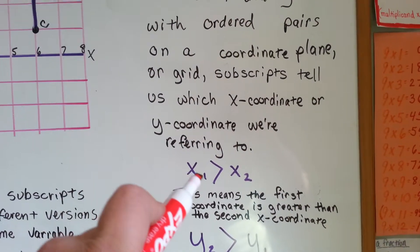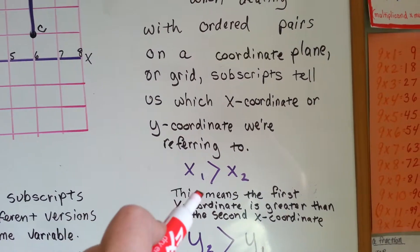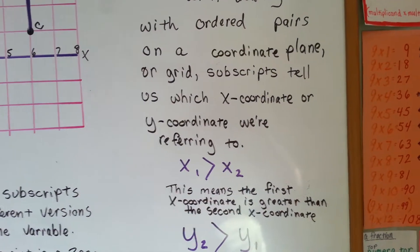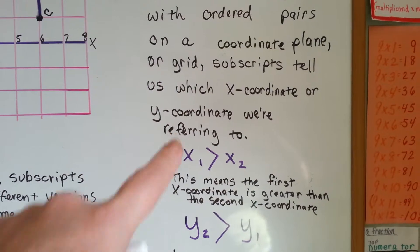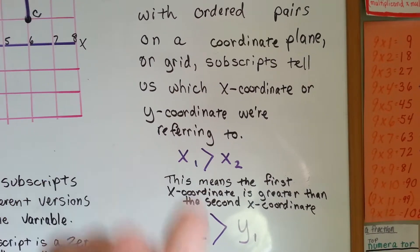So if you see x with this little 1 greater than symbol, x with the little 2, it means that the first x-coordinate is greater than the second x-coordinate.